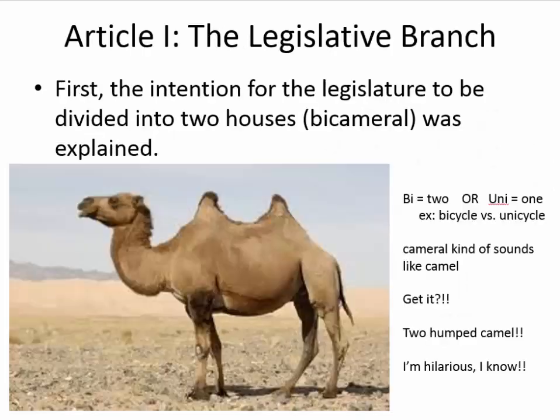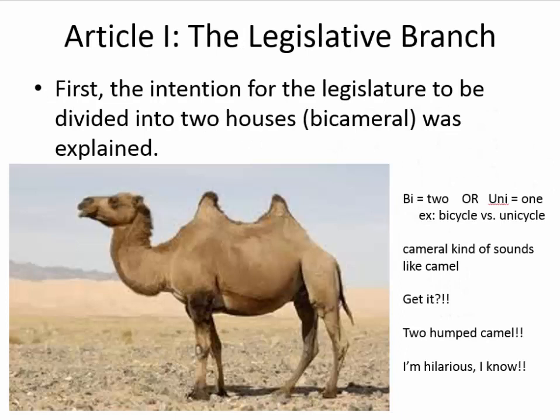Article 1 covers the legislative branch. The first intention was for the legislature to be divided into two houses. Bicameral is explained in Article 1 of the Constitution. 'Bi' means two — it's a root word for two. 'Uni' means one. A bicycle or a unicycle would be the good example here.